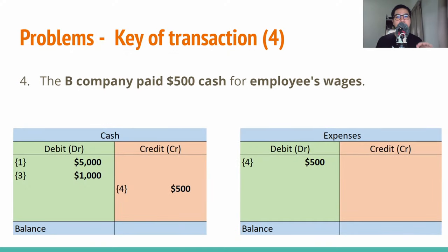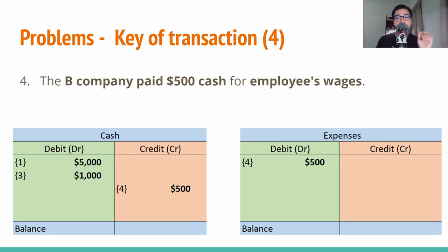Transaction four: B company paid $500 cash for employee wages. This transaction is special compared to the earlier ones because both the cash account and the expense account are money outflow — there is no inflow of money. Therefore, the money simply transfers from the cash account to the expense account. Final answer: the cash account is credited by $500 and the expense account is debited by $500.